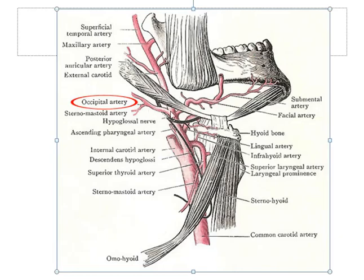The occipital artery gives the following branches: a mastoid branch, a meningeal branch, and muscular branches. One of the muscular branches is called the descending branch, which further divides into superficial and deep branches. The superficial branch anastomoses with the superficial branch of the transverse cervical artery, and the deep branch anastomoses with the vertebral artery and deep cervical artery.